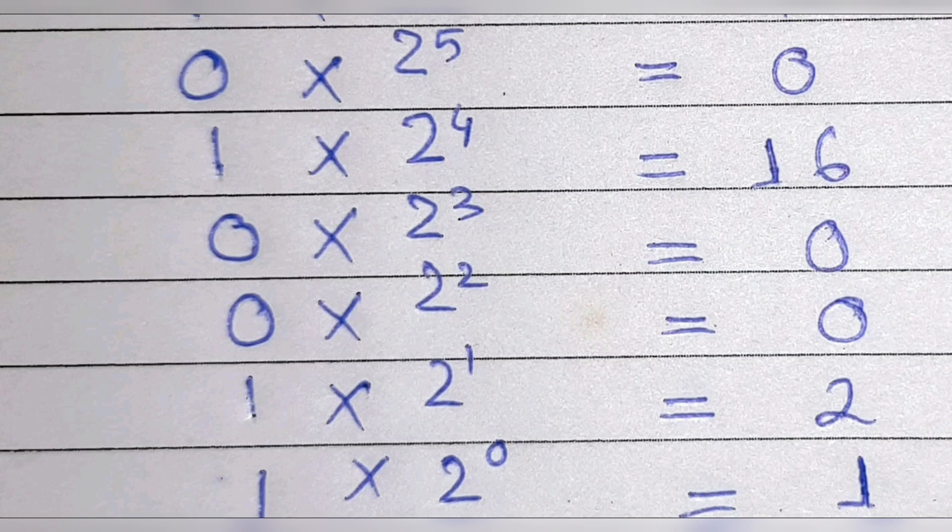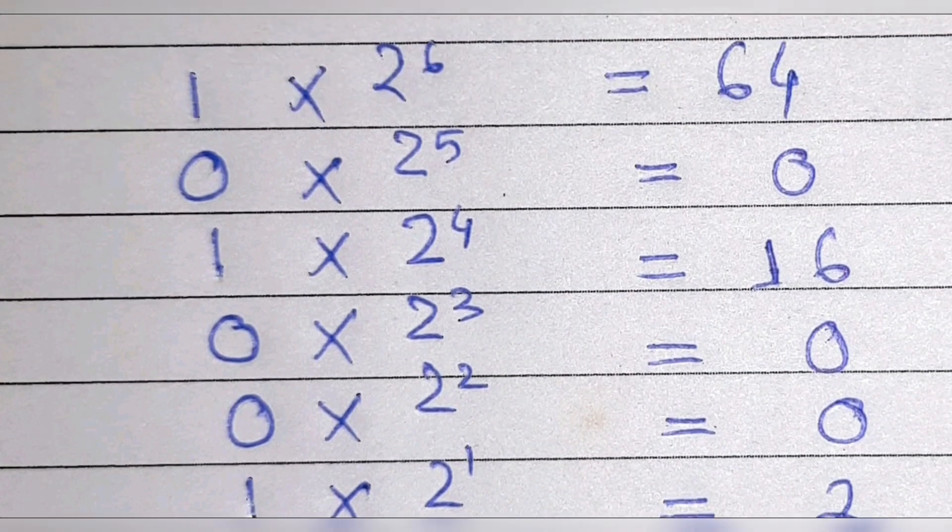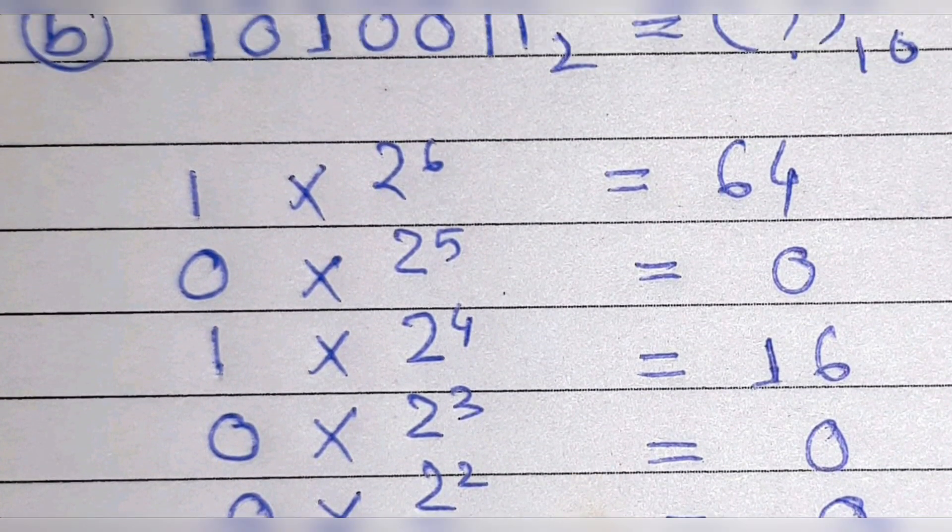After that we'll multiply all the numbers by two and we'll start the power from zero like 0, 1, 2, 3, 4, 5, 6. Here two power six means we'll multiply two six times, so we'll get 64.